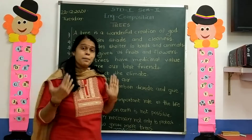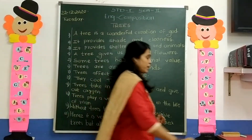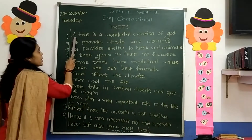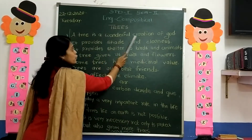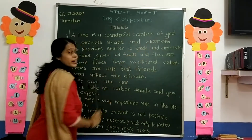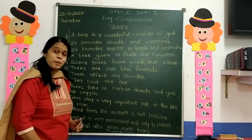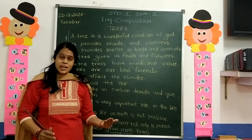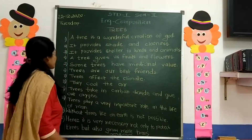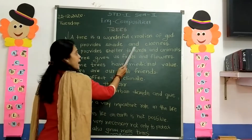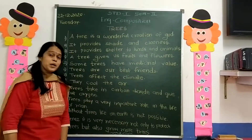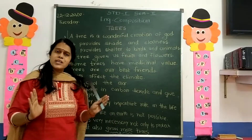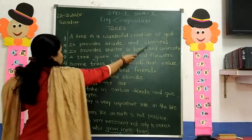Trees — yaani jhaad, peh. First sentence: A tree is a wonderful creation of God. Yaani tree jo peh jo Bhagwan ne banaya hai, ek sundar adbhut creation hai Bhagwan ka. It provides shade and coolness. Chhaya — hume kya dete hai? Shade, matlab chhaya, aur coolness, matlab thendak dete.